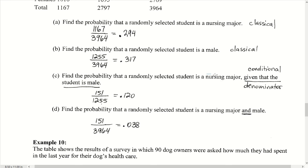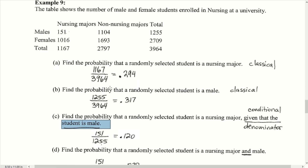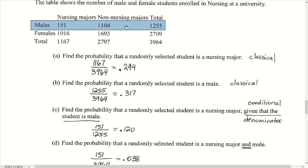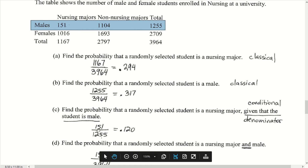We're looking for the probability of a nursing major given that the student was male. Since we already know the selected person was male, we don't have to consider the entire population — we restrict our attention to only those 1,255 males. Of those, 151 were nursing majors, so the probability is 151 divided by 1,255.